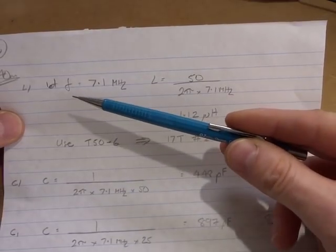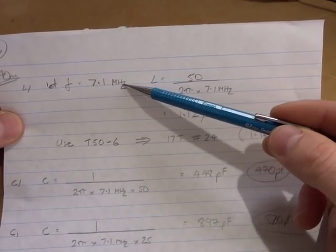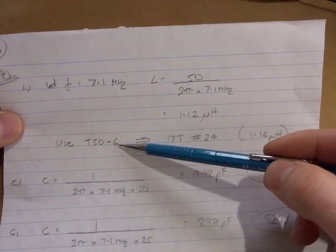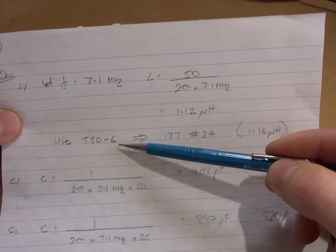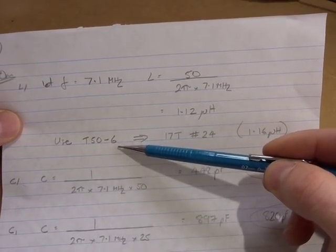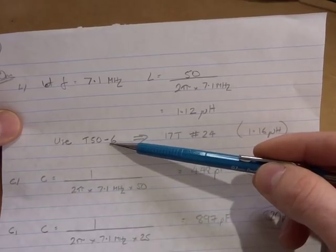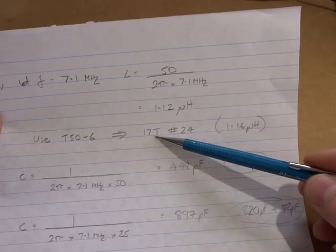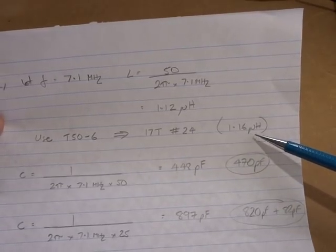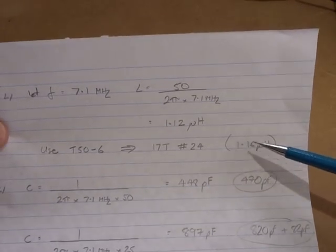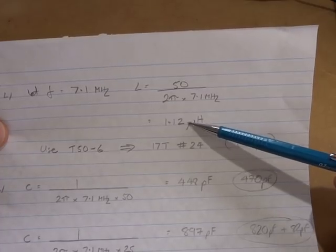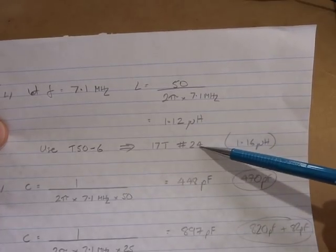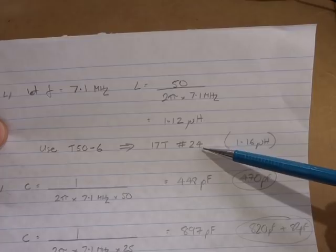Now this is the 40 meters or 7 megahertz, so that's the start of where the dash 6 material becomes effective, so in this particular case I'll use the yellow core, the T50-6. For that particular device there, 17 turns will give us 1.16 microhenries, which is close enough to 1.12, so we'll run with that, and again that'll be 24 gauge wire.